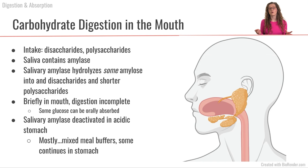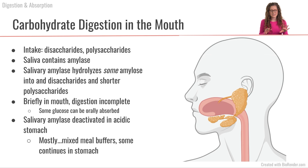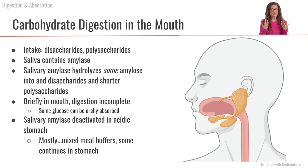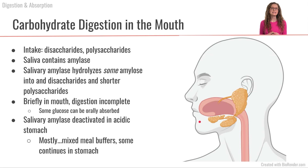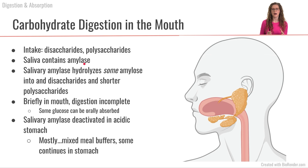Let's talk about what goes on in the mouth. Some carbohydrate digestion can occur there. Carbohydrates primarily come in the forms of disaccharides and polysaccharides — we don't have a substantial intake of monosaccharide form. In our mouth, we have a cocktail of saliva entering from the parotid gland, the submandibular gland, and the sublingual gland. Saliva contains the enzyme amylase, which can hydrolyze some of the amylose from starch into smaller disaccharides and into some monosaccharides that we can absorb.